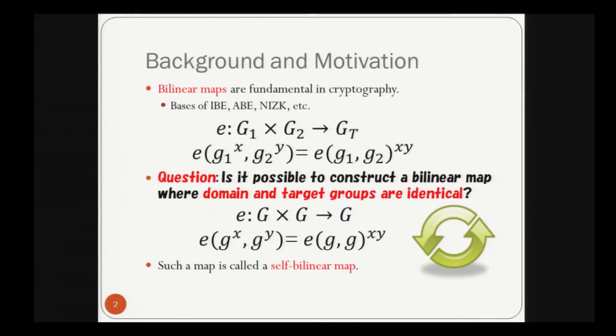This leads to a natural question: is it possible to construct a bilinear map where the domain and target groups are identical? Such a map is called a self-bilinear map, and our motivation in this paper is to construct a cryptographic self-bilinear map.